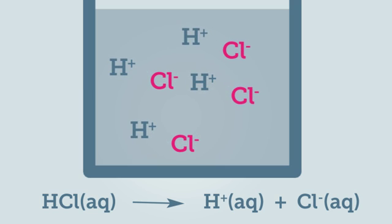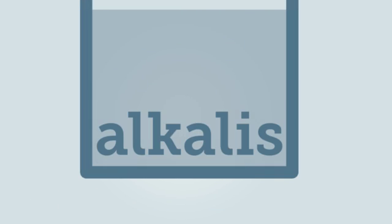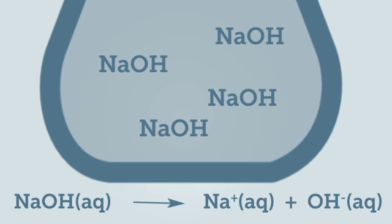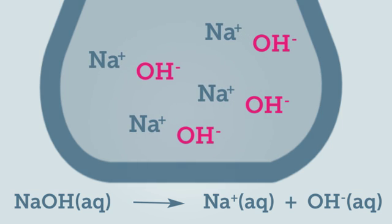Acids can be neutralised by substances called bases. Bases that are soluble in water are called alkalis. When an alkali such as sodium hydroxide is dissolved in water, it completely dissociates, so that all of the sodium ions and hydroxide ions are dispersed randomly in the solution.